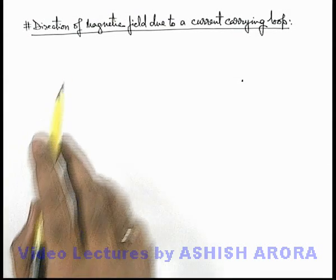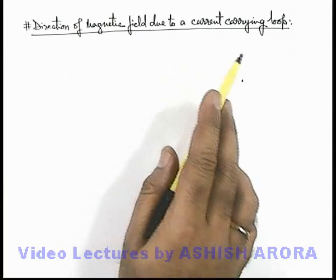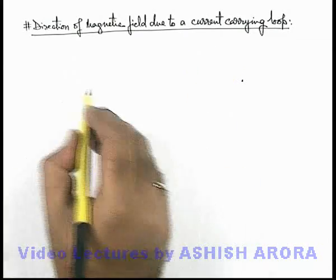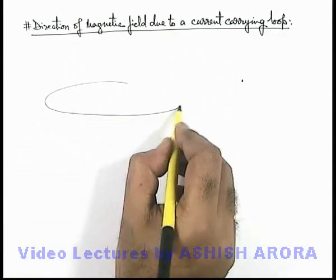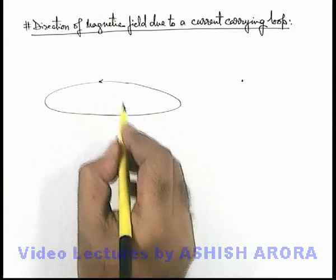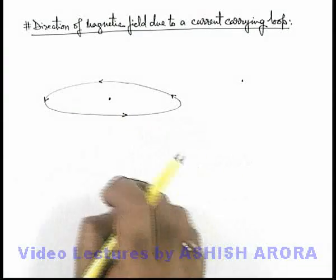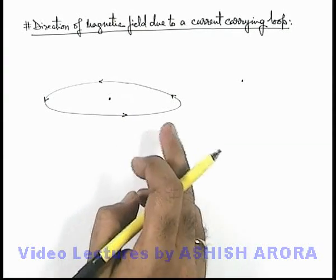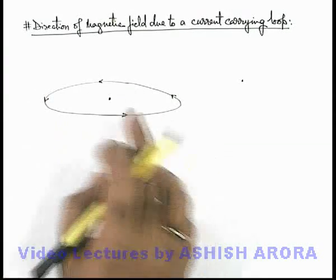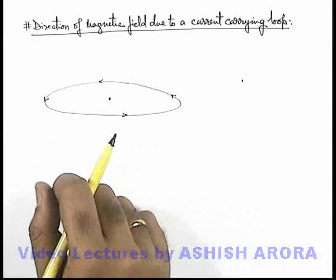Now let us study about the direction of magnetic field due to a current carrying loop. Say if we are given with a circular coil which carries a current in anti-clockwise manner like which I am drawing here, and say it is placed horizontally, and we wish to find out the direction of magnetic field at the centre of loop and at other points in its surrounding.